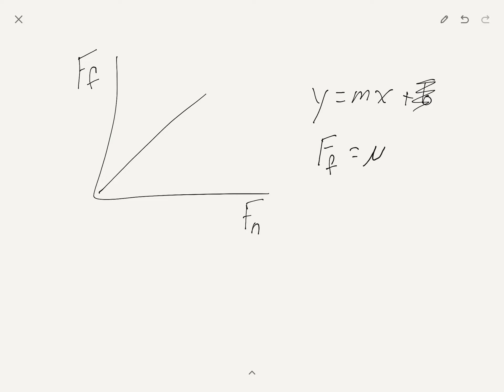So whereas y will be the force due to friction and m being the slope, which we mentioned was called mu, the coefficient of friction. And our x-axis is measuring the normal force. And this is why this was a fun lab.